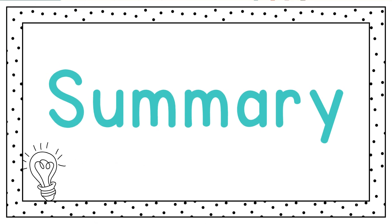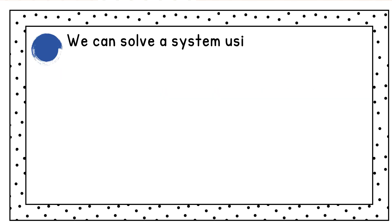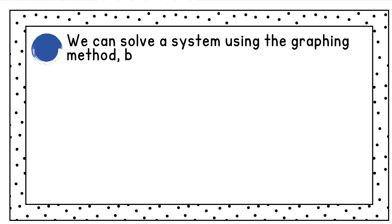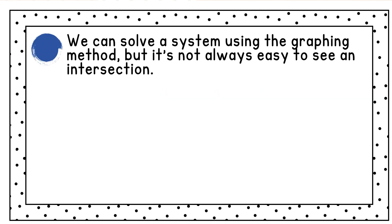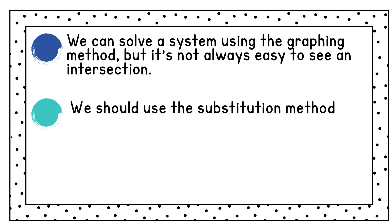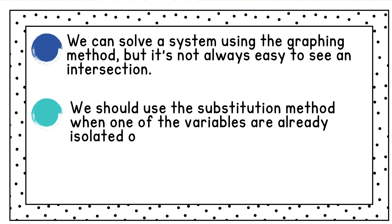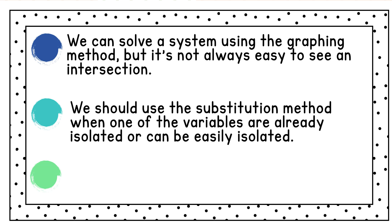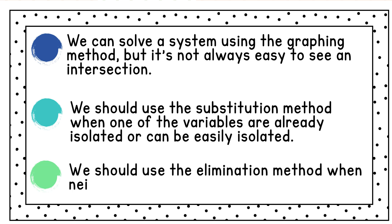To recap what we've learned: we can solve a system using the graphing method, but it's not always easy to see the intersection. We should use the substitution method when one of the variables are already isolated or can be easily isolated. And we should use the elimination method when neither variable is isolated.